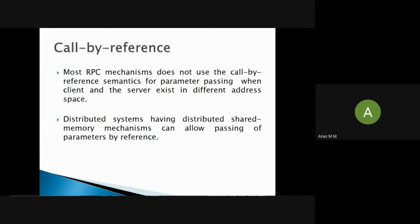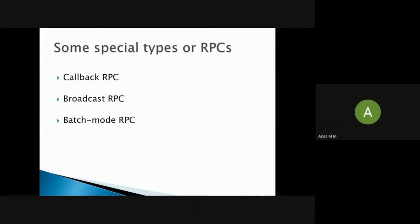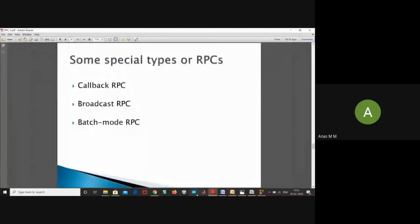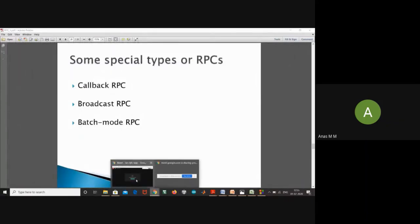Distributed systems with a distributed shared memory mechanism can allow passing parameters by reference. However, normal RPC does not use call by reference because machines have different address spaces. These are the different categories of RPCs: callback RPC, broadcast RPC, and batch mode RPC.